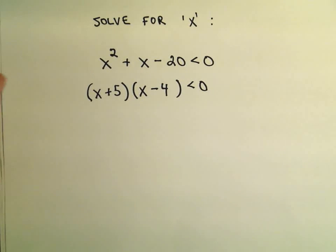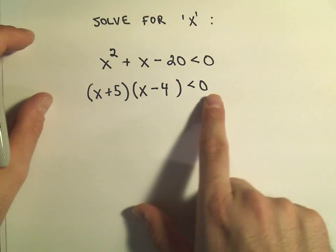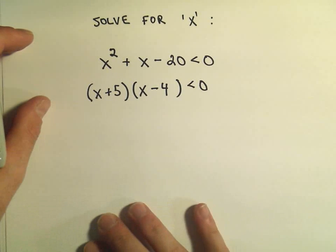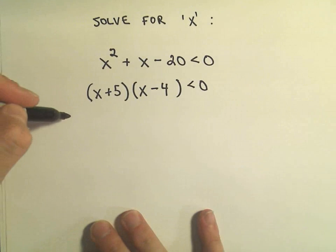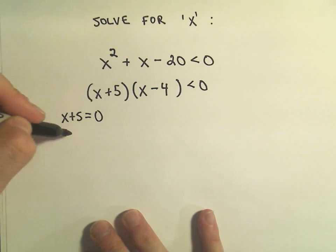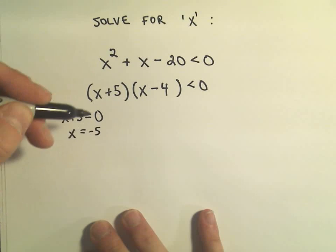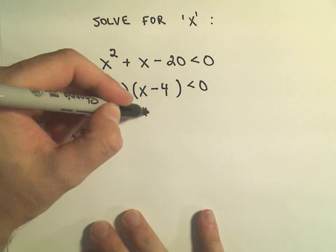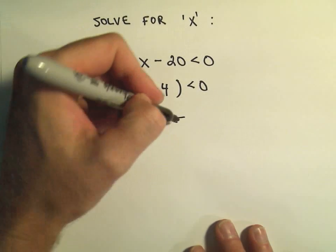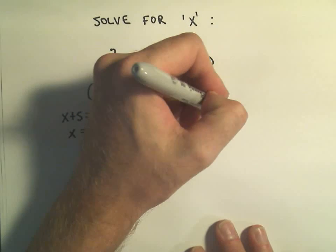Okay, so a common mistake at this point is to simply say x plus 5 has to be less than 0 or x minus 4 has to be less than 0, and that's not correct. What I do, though, is I do kind of imagine, I do set each piece equal to 0, so I'll get x equals negative 5. If I set the other part equal to 0, I'll get x equals 4. These are not the solutions.